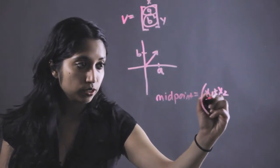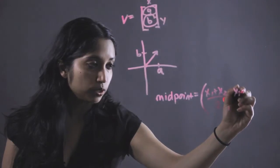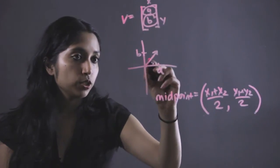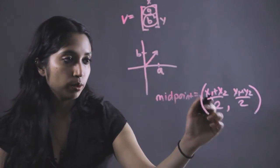X1 plus X2 over 2, comma, Y1 plus Y2 over 2. Because again, we just want to split these values in half to get the midpoint.